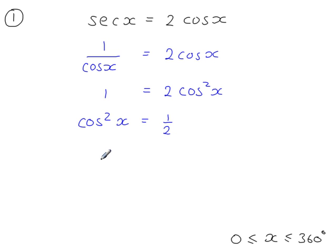And then if you square root both sides, you'll get cos x is equal to the square root of a half. And cos x is equal to minus the square root of a half. So then you've got this.